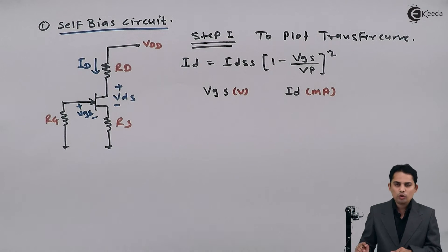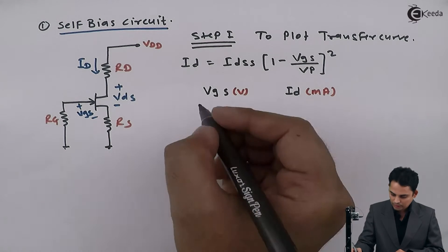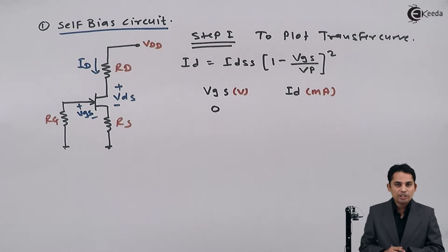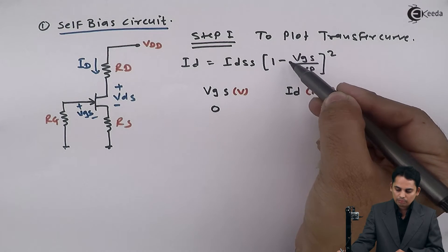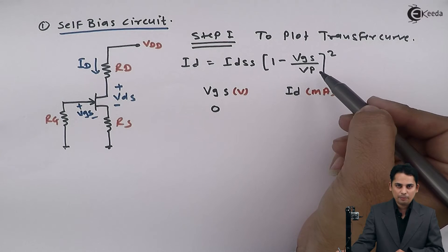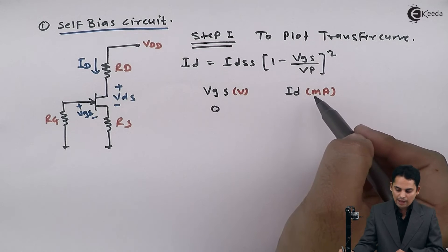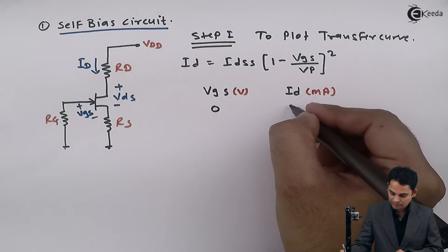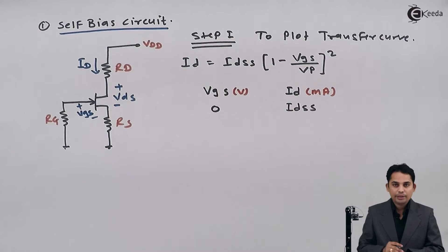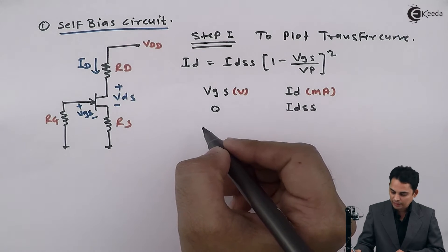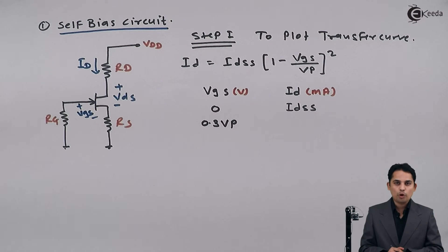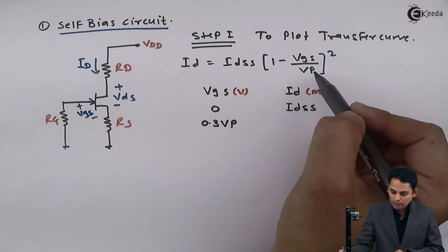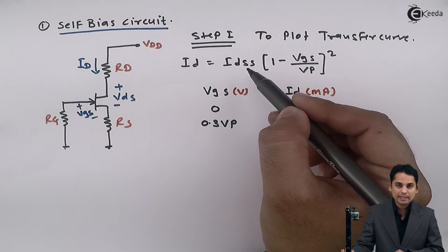For the first value, we take Vgs equal to 0 volts. Substituting in the equation, the whole term Vgs upon Vp becomes 0, so 1 minus 0 squared gives 1. Hence the value of drain current Id becomes Idss. This is the maximum amount of current flowing. When Vgs is equal to 0.3 Vp, solving the equation gives Id equal to Idss divided by 2.